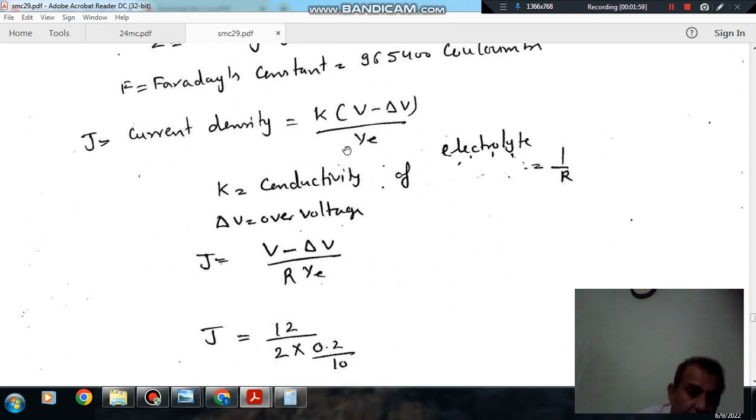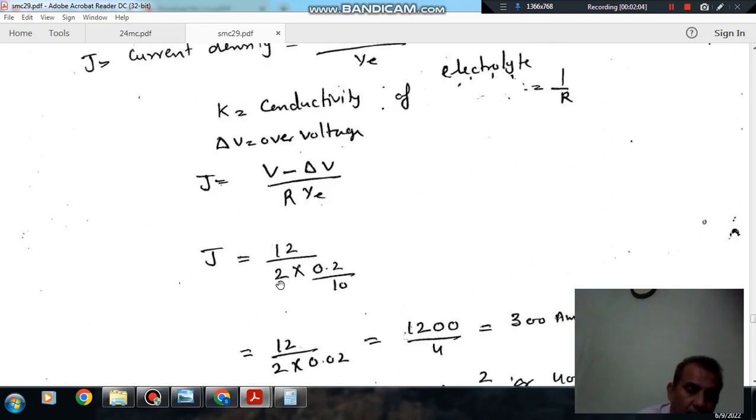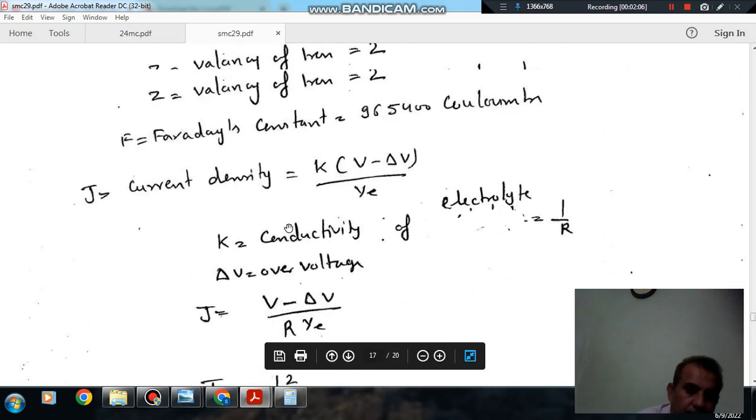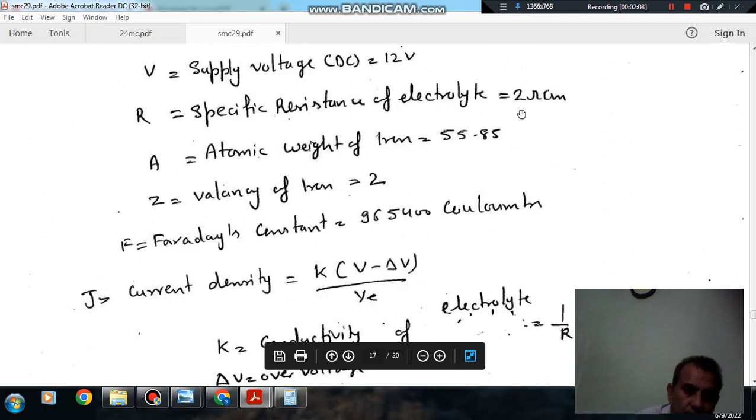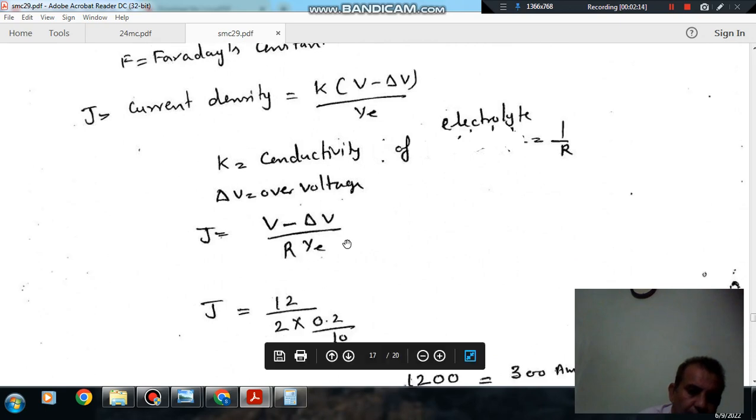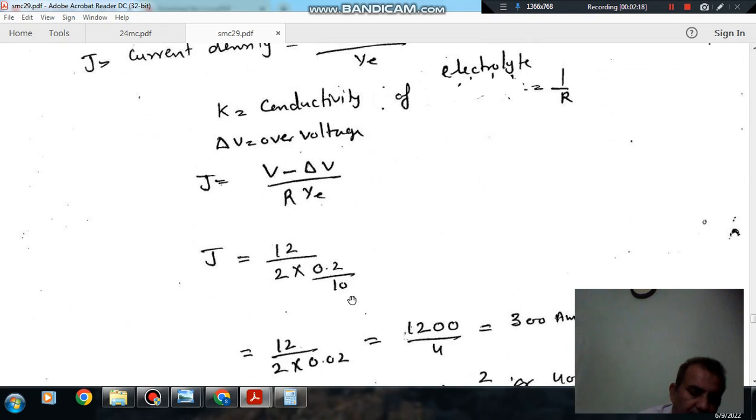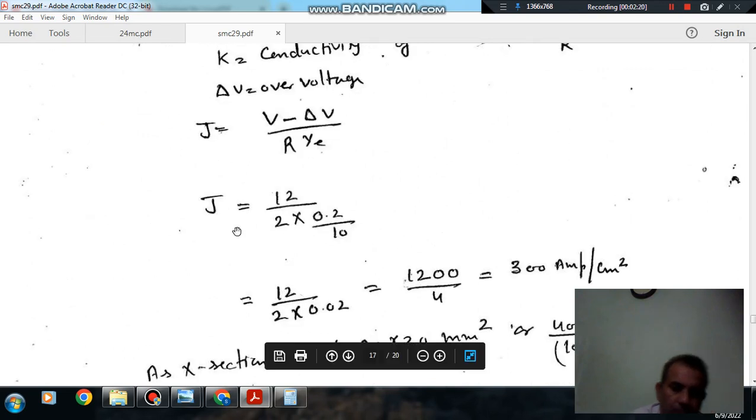So now, as there is no overpotential, we will take delta V as 0. V is 12. R is 2, and K is 1 by 2. Y is 0.2 mm, or in centimeter is 0.2 by 10 centimeter. So from this, current density comes out as 300 ampere per centimeter square.